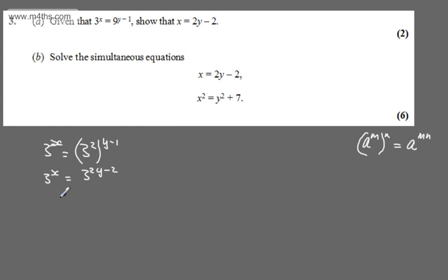We have the same base, the base is 3, so we can equate the powers. Therefore, what we can say then is x will be equal to 2y minus 2 as required. And that gives us now two marks.